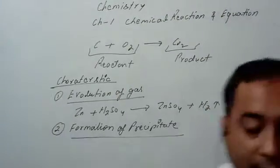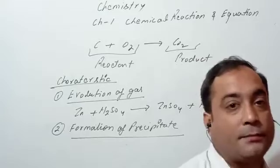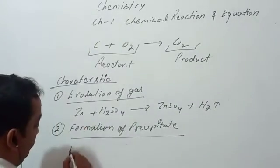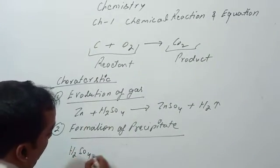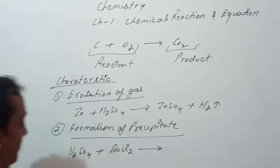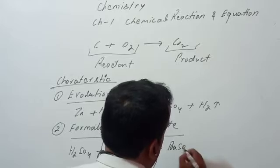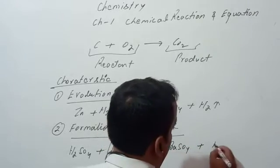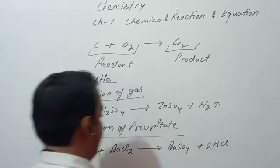Here is the example: sulfuric acid plus barium chloride gives barium sulfate plus hydrochloric acid.